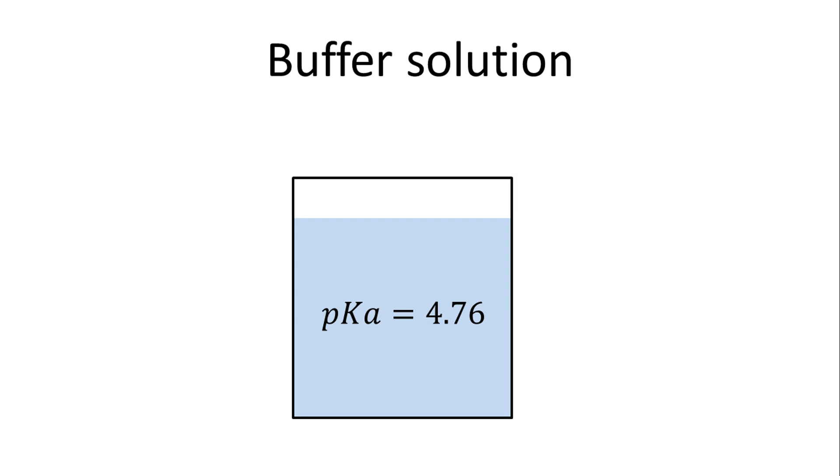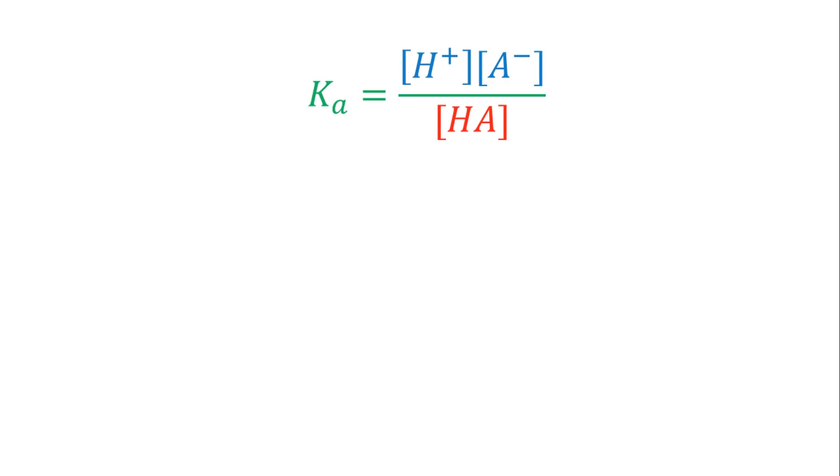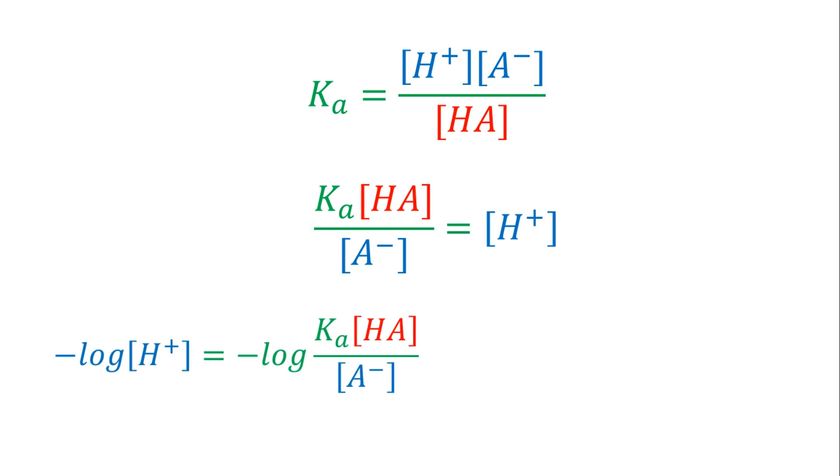We will start with the equilibrium equation for an acid dissociation reaction. From this equation, we will solve for the concentration of H+. Then we take the negative logarithm of both sides. To the right, we have the negative logarithm of the acid divided by the base. This is equal to the positive logarithm of the inverse ratio.